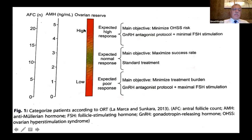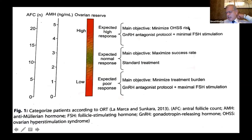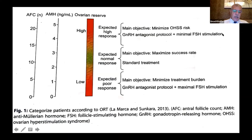For patients at the extreme end — AMH more than 4 and more than 15 follicles — expect a high responder. The main issue here is patient safety: minimizing ovarian hyperstimulation syndrome. The safest approach is the antagonist protocol, minimizing FSH stimulation, triggering with GnRH agonist, and adopting a freeze-all protocol. OHSS should essentially be preventable with this approach.